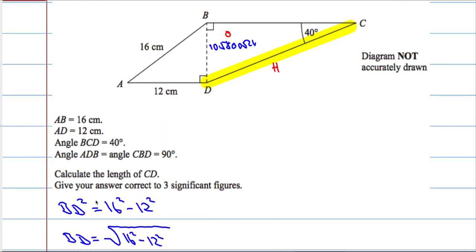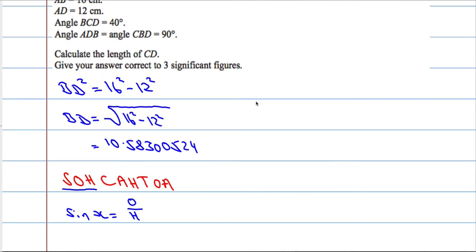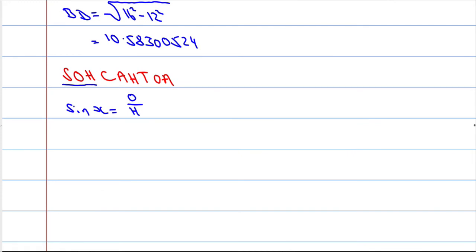In relation to this angle, sin of 40 degrees equals the opposite, this 10.5800524 over hypotenuse. So, we're going to multiply the hypotenuse, and we're looking for the hypotenuse. Sin, the angle is 40 degrees, equals the opposite, which is this 10.58300524 divided by the hypotenuse.